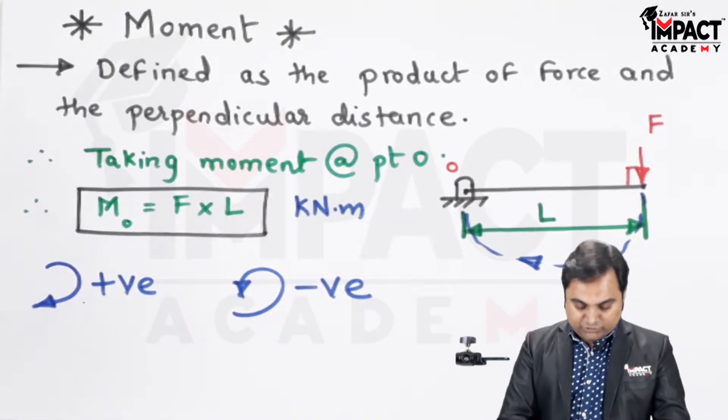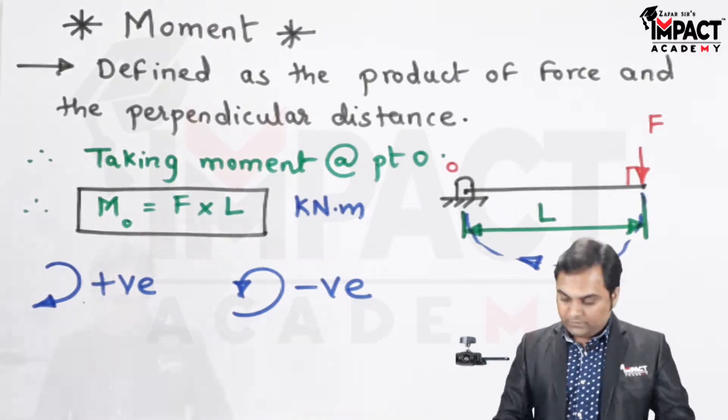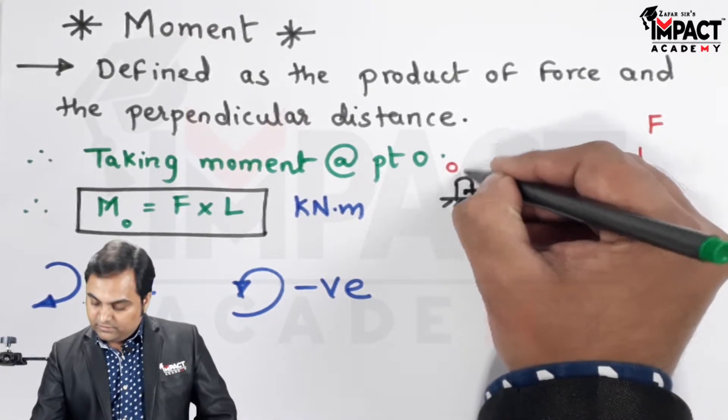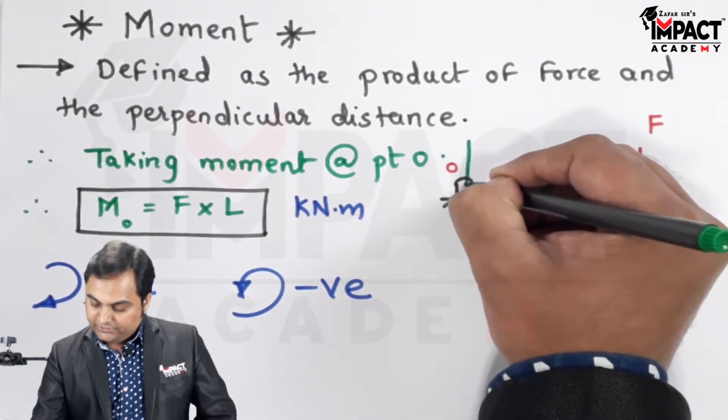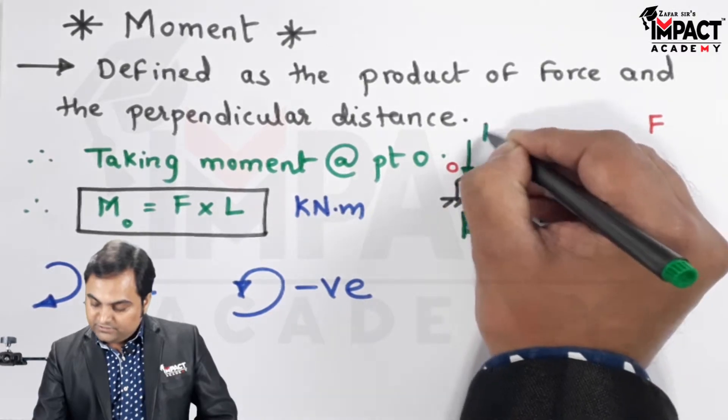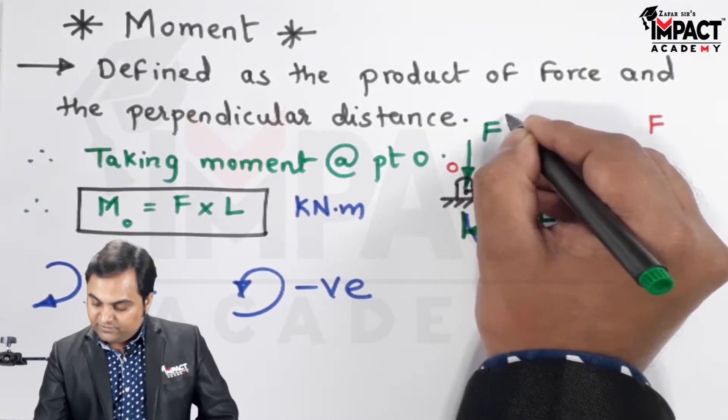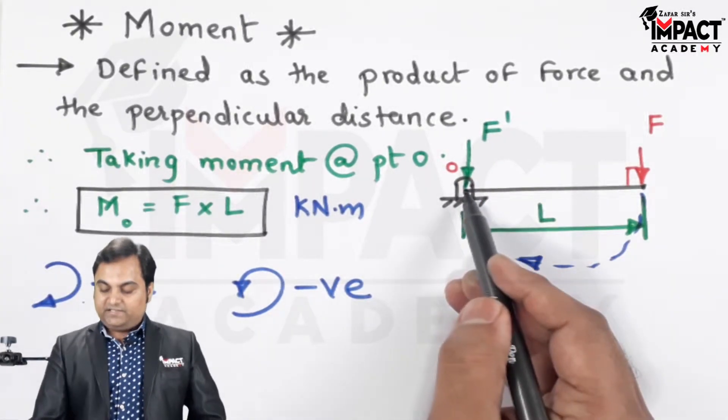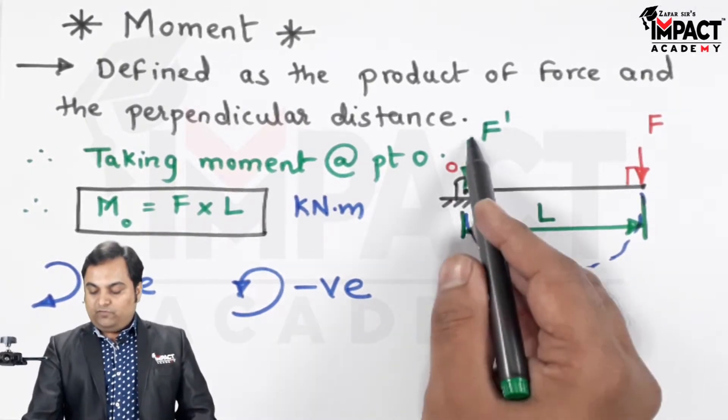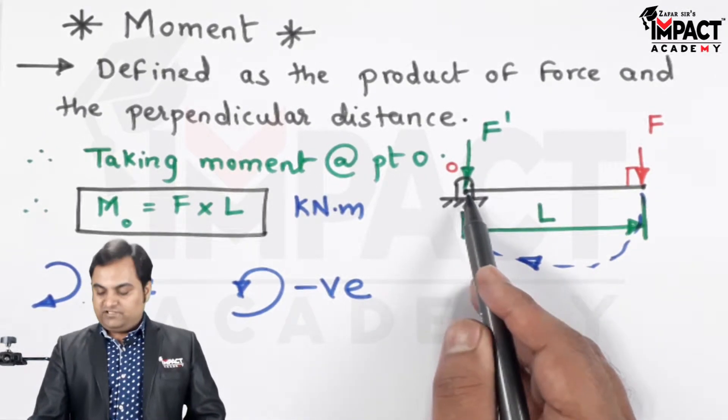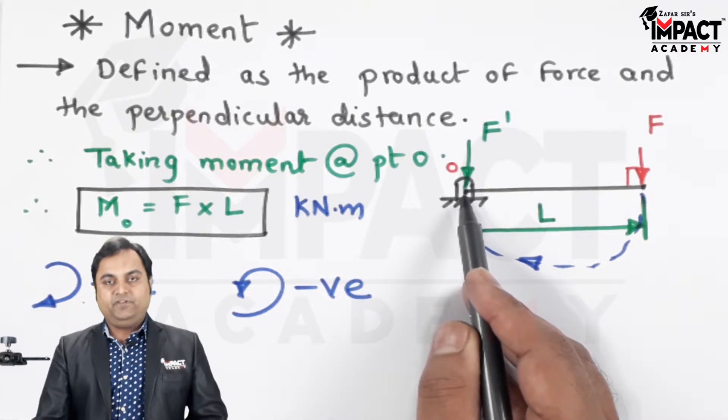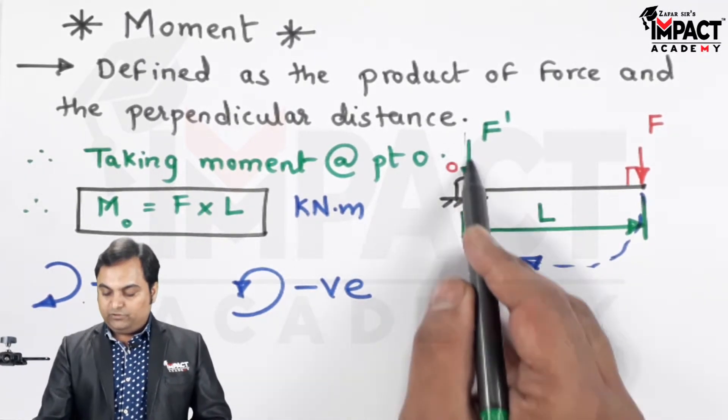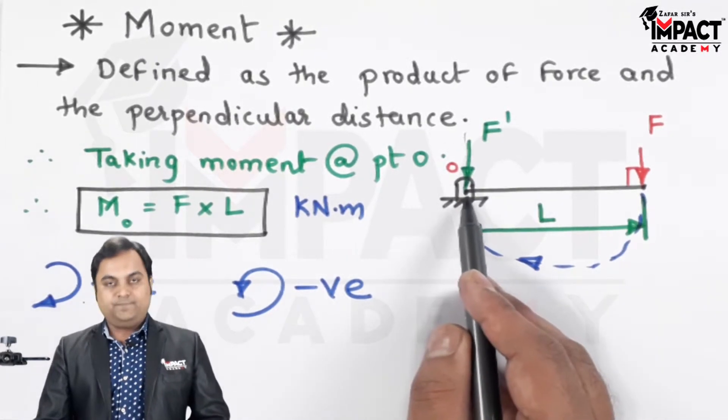Now suppose there is a force which is acting through the same location where we have this point. I am taking an example here: if there is a force F prime which is acting through the same location, when I want to take the moment of this force F prime about the same point, the answer would be zero because there is no perpendicular distance between the force and point O.